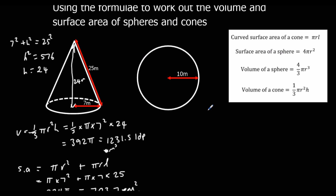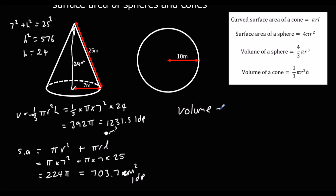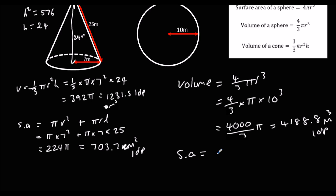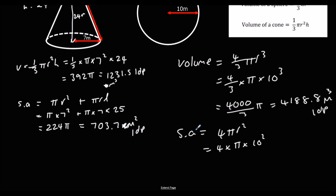Now for the sphere: the volume is 4 over 3 pi r cubed, so 4 over 3 times pi times 10 cubed. That gives 4000 over 3 pi, or 4188.8 meters cubed to 1dp. For the surface area, it's 4 pi r squared, which is 4 times pi times 10 squared, giving 400 pi, or as a decimal 1256.6 meters squared to 1dp.